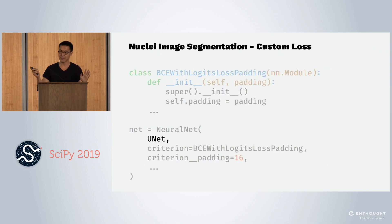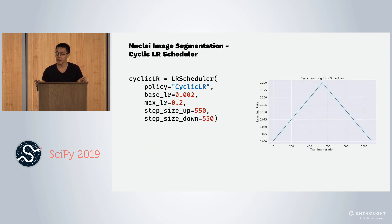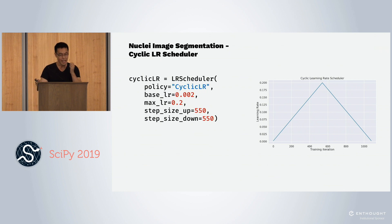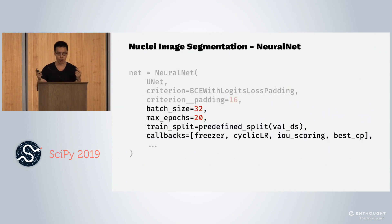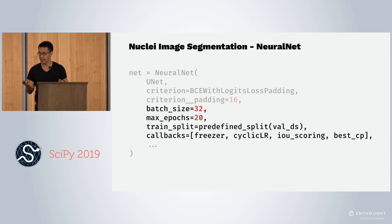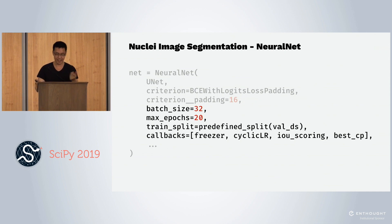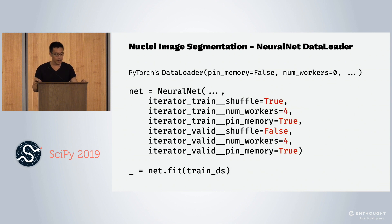We define the UNet neural net object. For the learning rate callback, we use the cyclic learning rate system developed by Leslie Smith and popularized by Fast.ai, where you have a low learning rate that goes up to a high learning rate and back down. This was added in PyTorch 1.1. We place our callbacks into the callbacks parameter, define a predefined validation split, set a batch size, and specify the number of epochs.